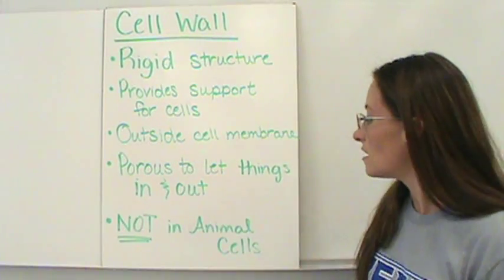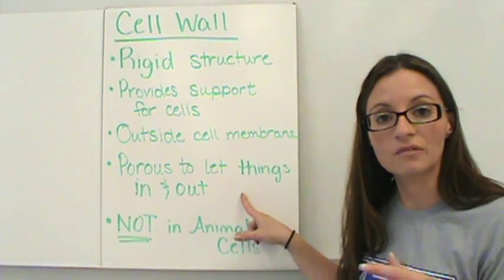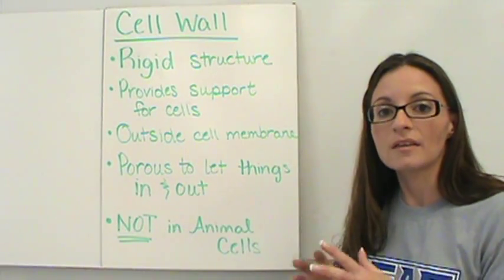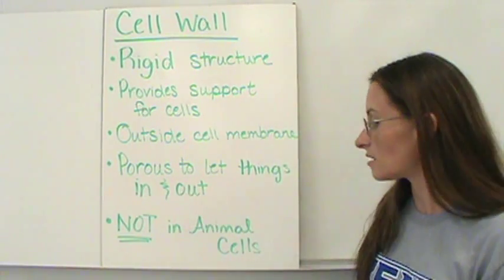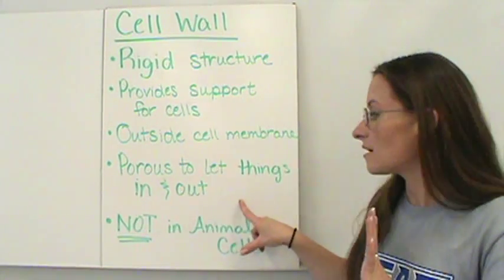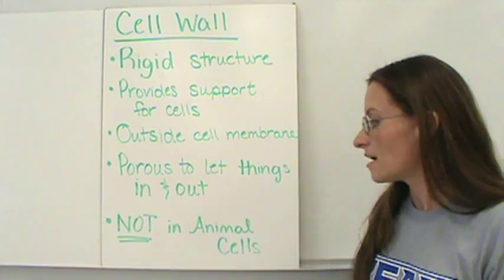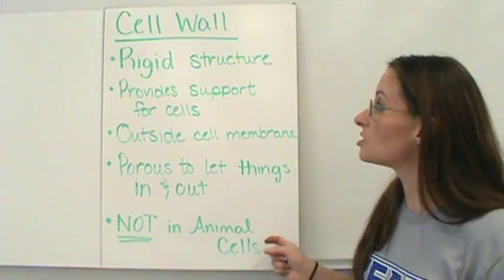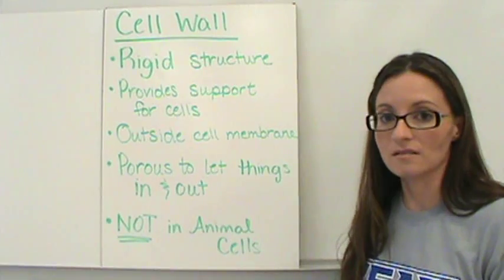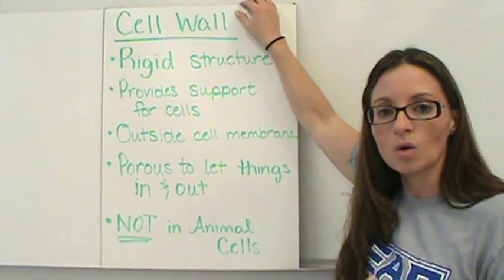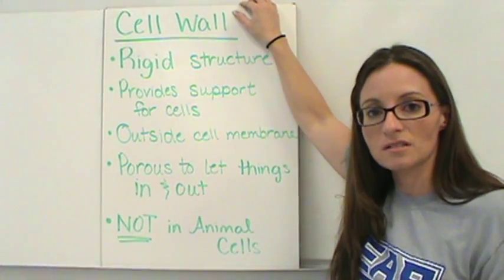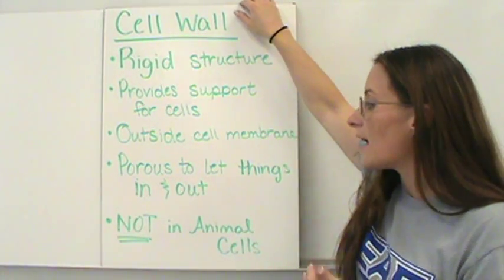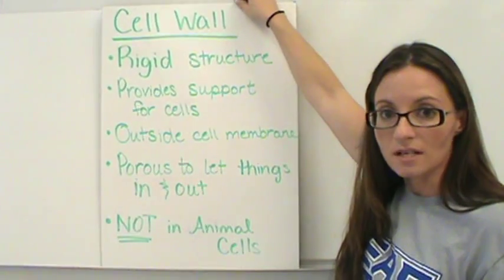The cell wall is going to allow things to move through it very easily. It's going to be the cell membrane that controls what goes in and out of the cell. The cell wall allows things to move in and out freely. And finally, it is not located in animal cells — you will not find a cell wall in animal cells. So a cell wall is just there for structure and support; it's not for protection and it's not in animal cells.